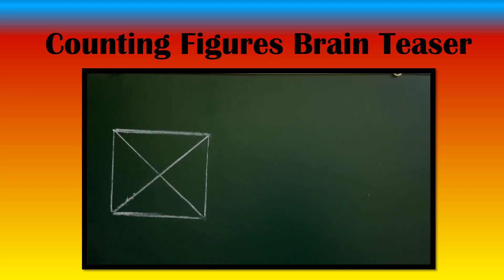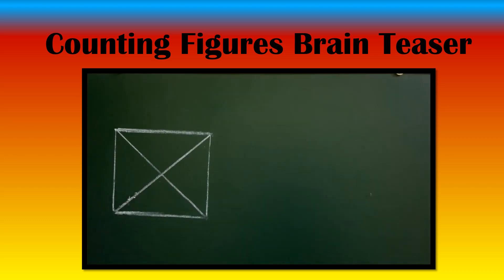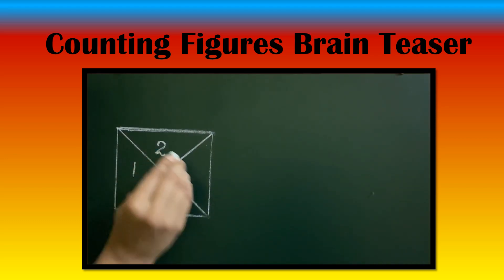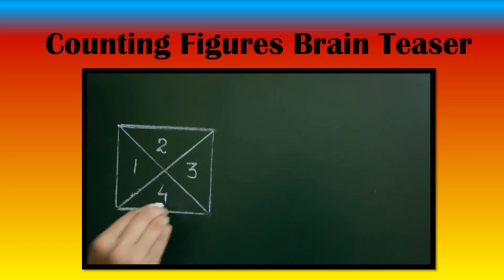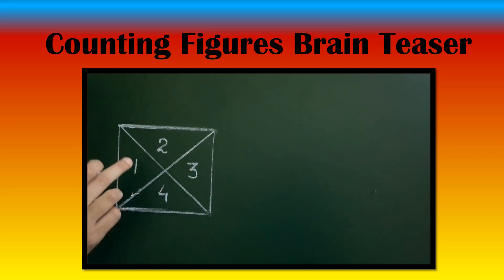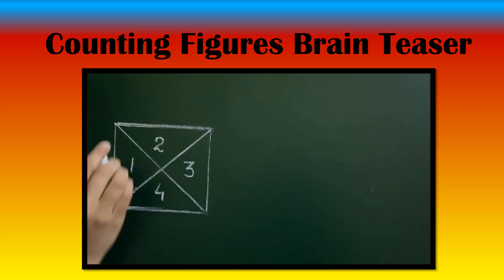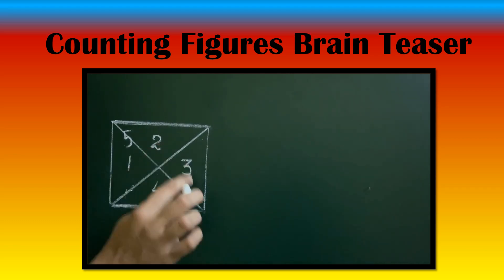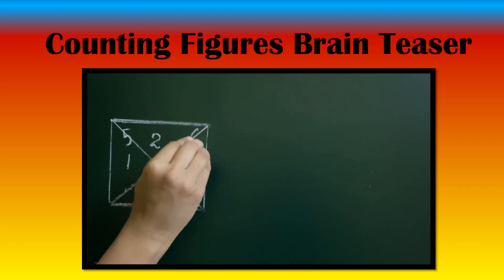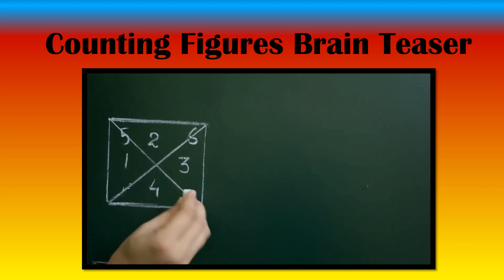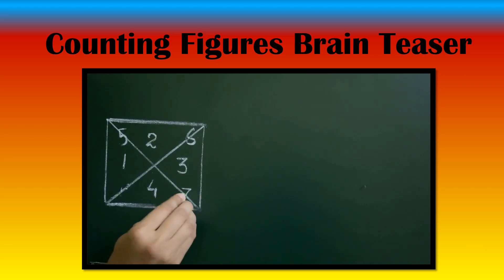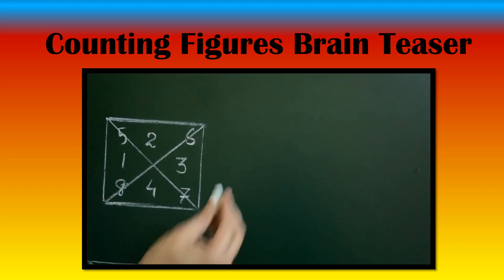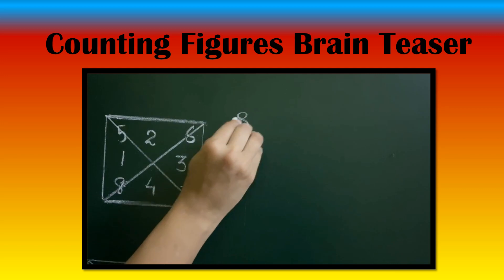To count the number of triangles in this square, let's start: 1, 2, 3, 4. Then 1 and 2 together form a triangle, so let's count it as 5. 2 and 3 make 6. This pair is a triangle — 7. And this pair is a triangle — 8. So total 8 triangles in this figure.